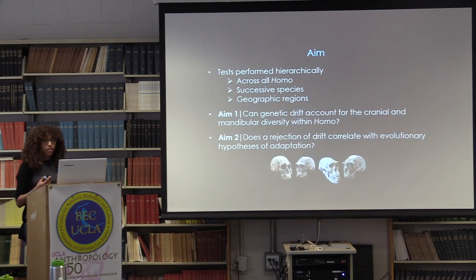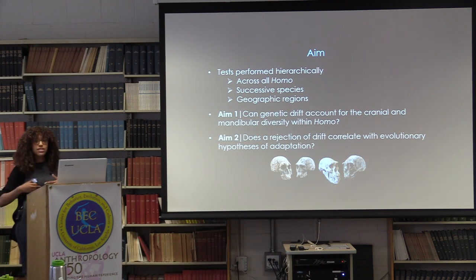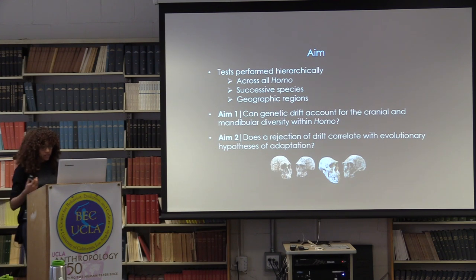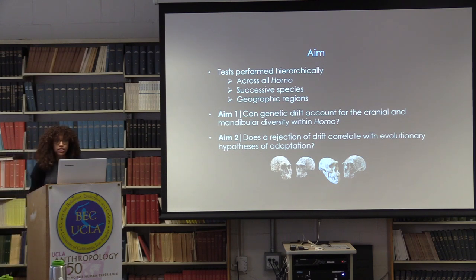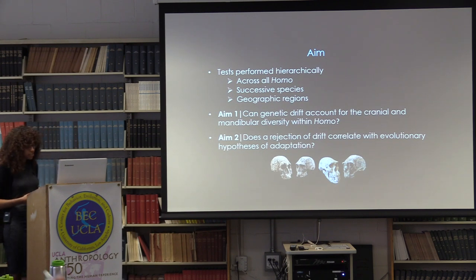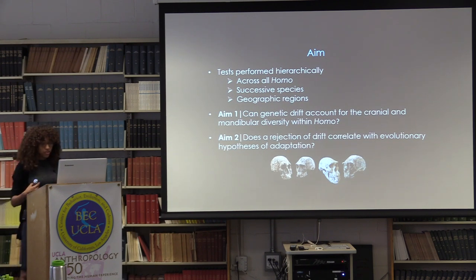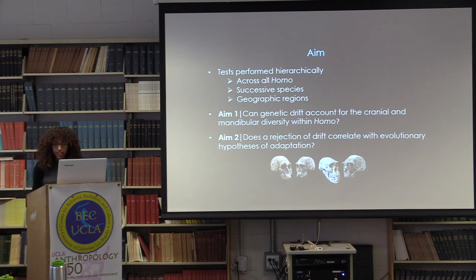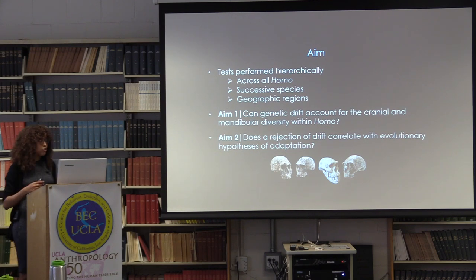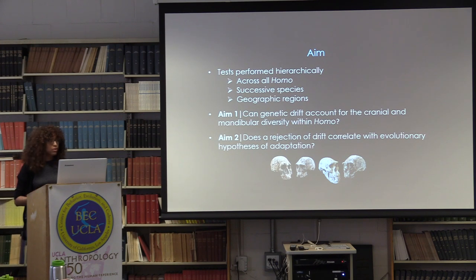I performed these tests hierarchically to focus on relationships between temporally successive hominins. First I looked across all of Homo to test for random versus adaptive divergence. Then I focused on the relationships between successive species at different levels as well as different geographic populations. The aim was to determine whether non-adaptive forces were responsible for the variability in Homo, and to explore possible correlations between these results and major evolutionary events, morphological changes, and adaptive hypotheses within our genus.